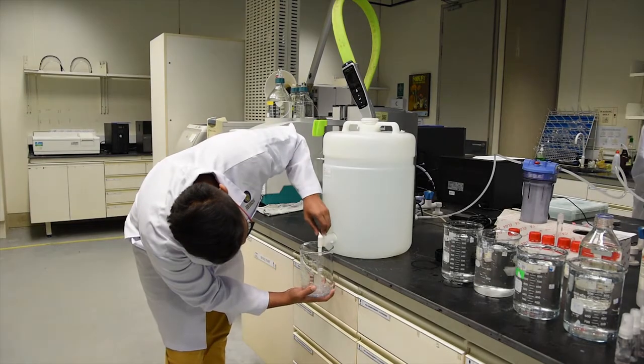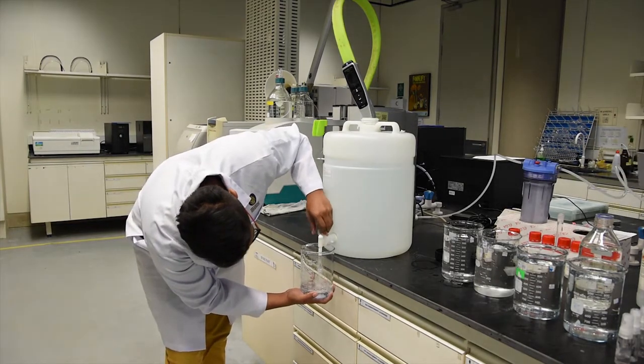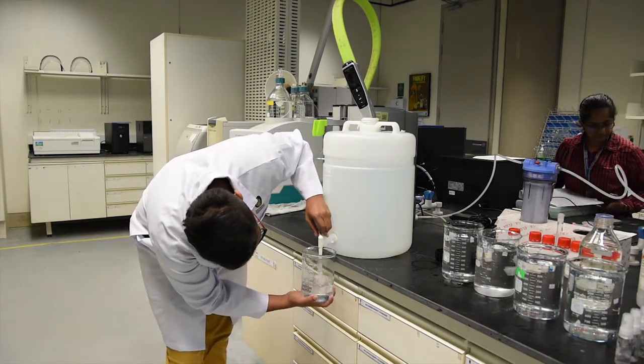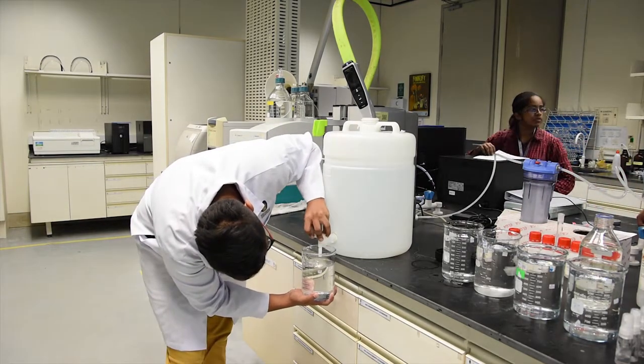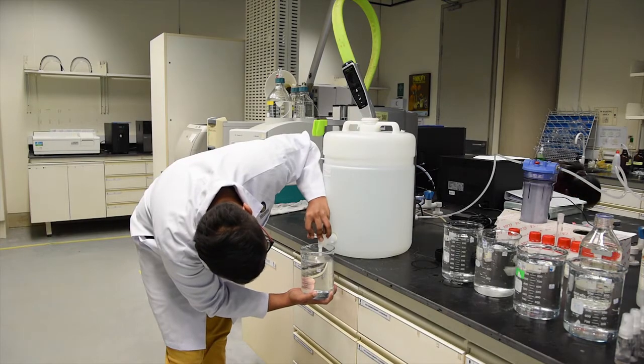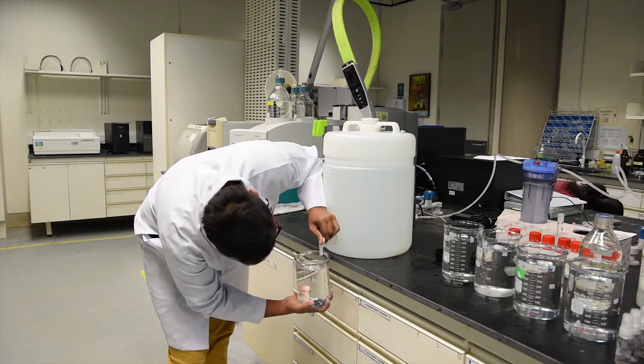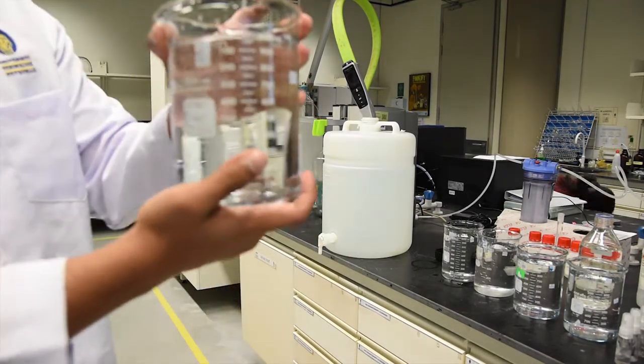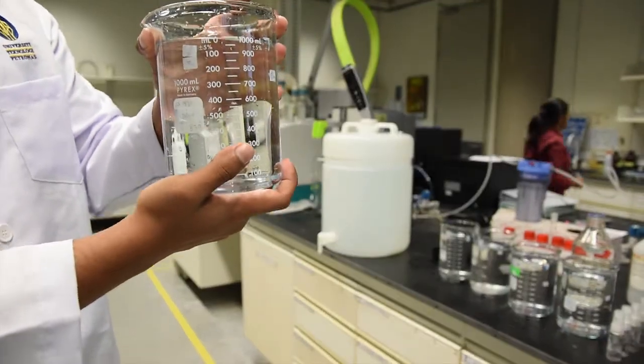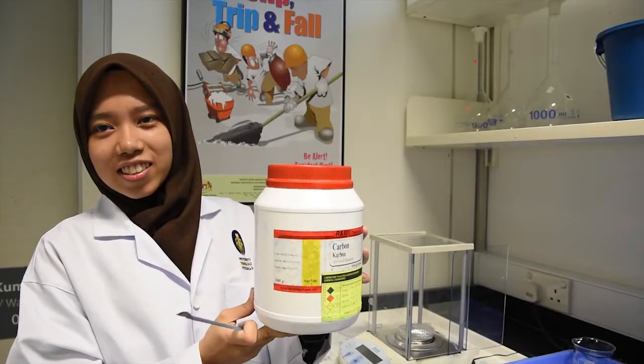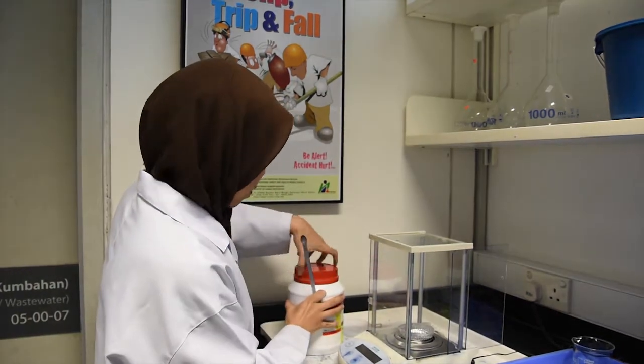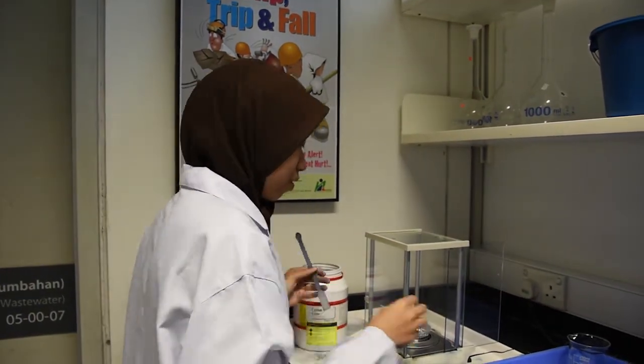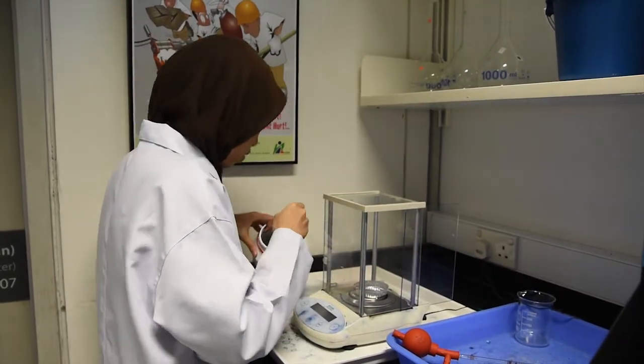As for the procedure, one liter of distilled water is filled into five beakers. Next, five different samples of 0.2 gram granular activated carbon is weighed on a weighing scale.